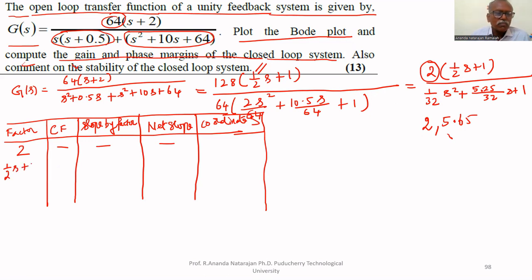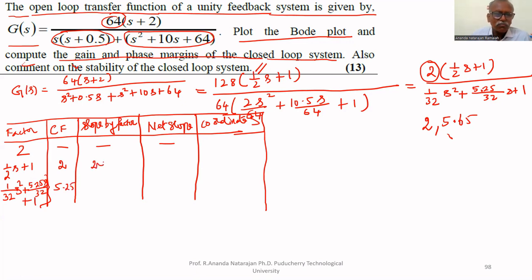The factor (1/2·s + 1) in the numerator contributes a slope of +20 dB/dec. The second-order factor (1/32·s² + 5.25/32·s + 1) is in the denominator and is second order, so it contributes −40 dB/dec. The net slope after corner frequency 5.65 is 20 − 40 = −20 dB/dec.